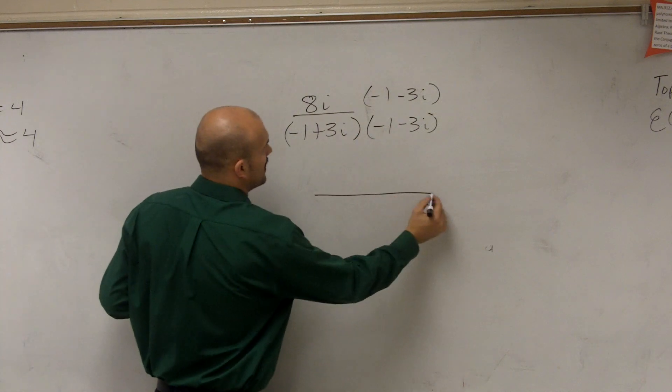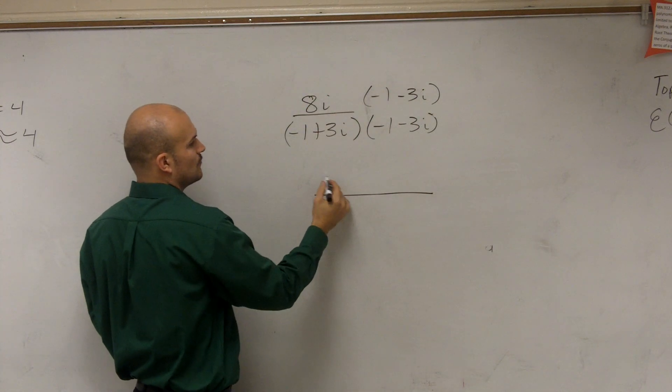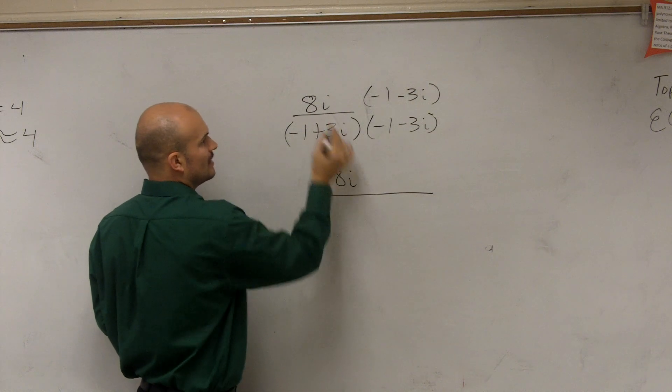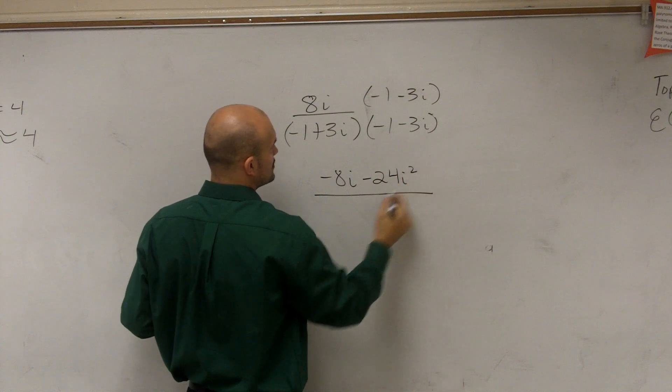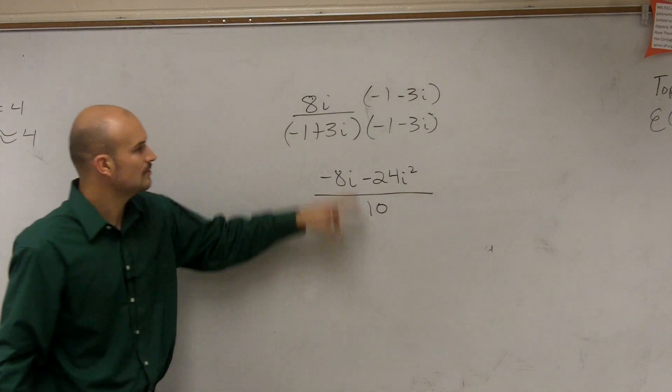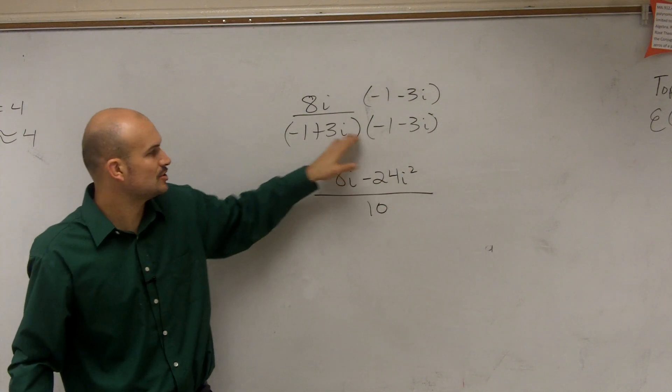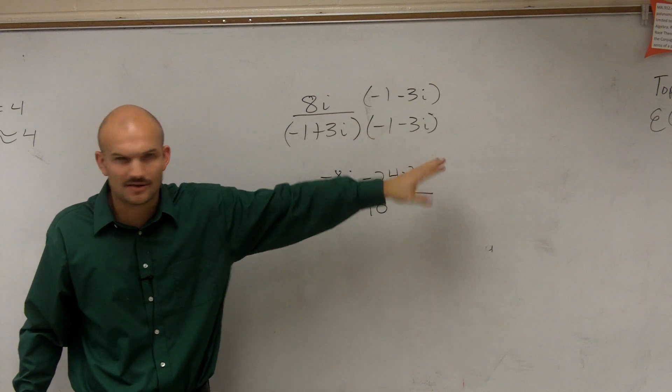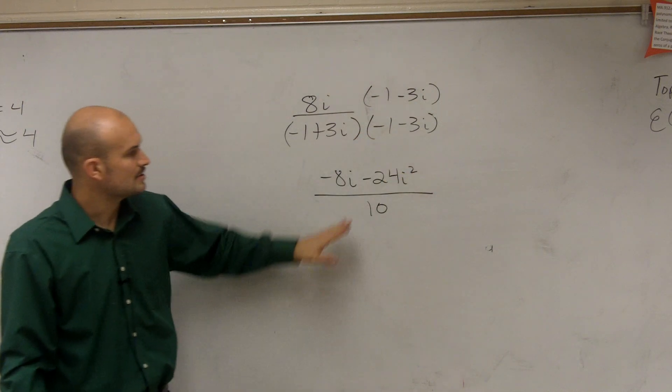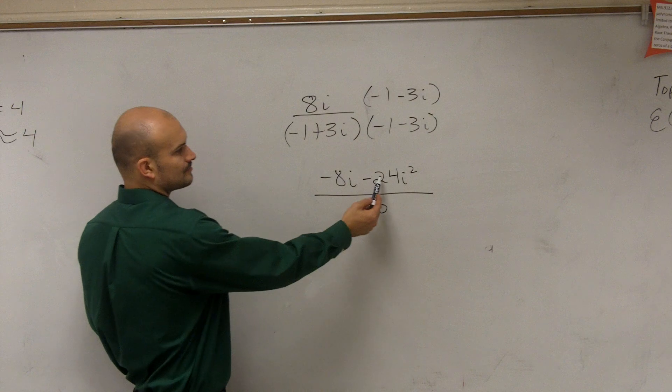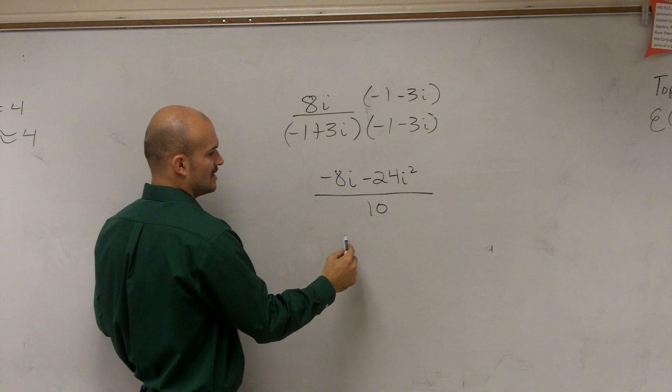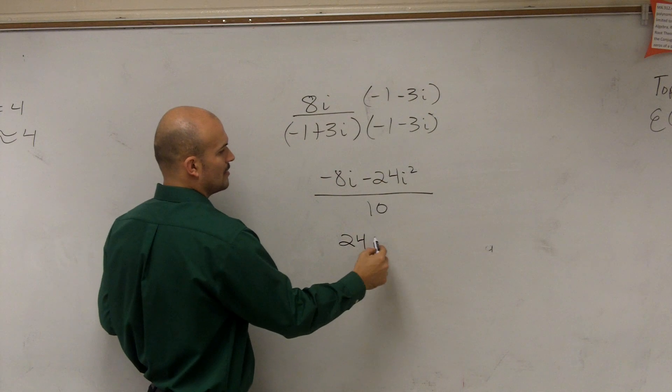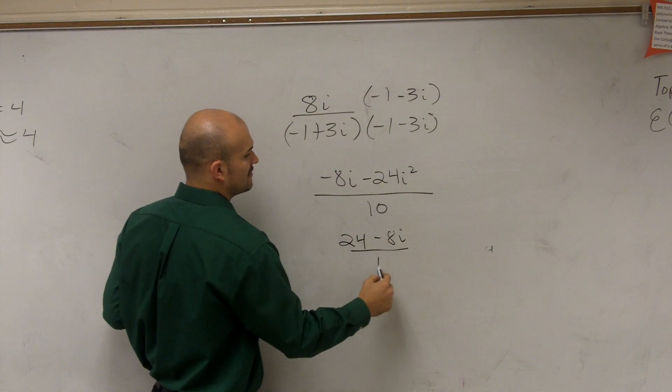And then you have to just multiply on top. 8i times negative 1 is negative 8i. 8i times negative 3i is going to be a negative 24i squared divided by 10, which is with your binomial multiplied by its conjugate. That was the math work I already did there. So now we just need to simplify this. i squared is negative 1. Negative 1 times 24 is going to be a positive 24 minus 8i divided by 10.